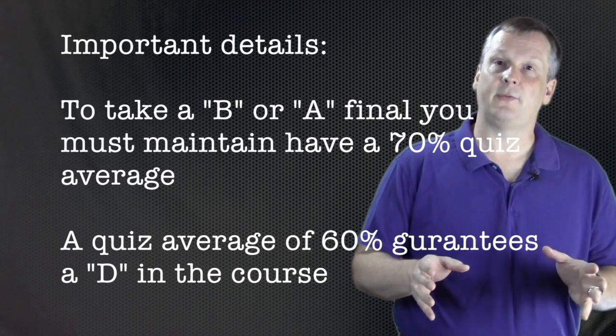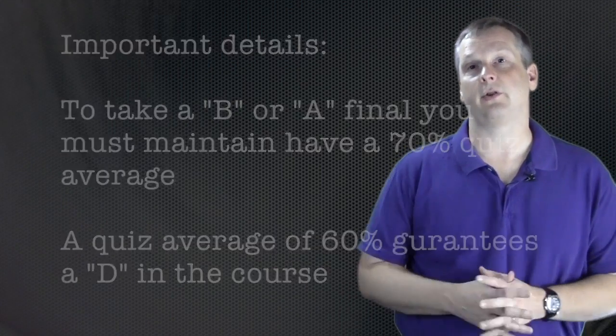Also if you have a quiz average and maintain a 60 percent quiz average, you've locked in a D for the class. If you want a C you have to pass the C test, but if you get a 60 percent quiz average I wanted to honor the work that you do on a daily basis on those quizzes and guarantee a D in the class so long as you maintain that D quiz average.